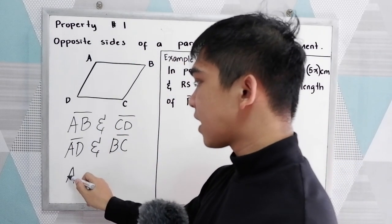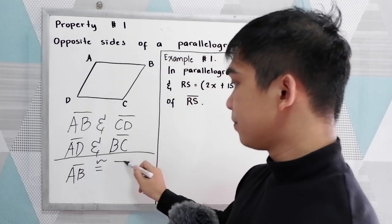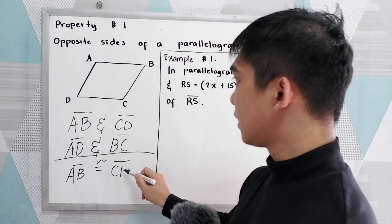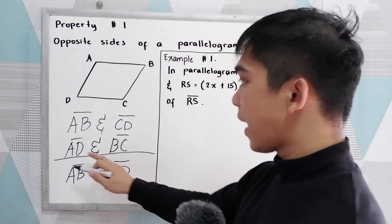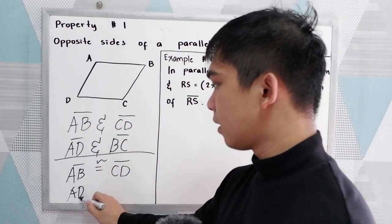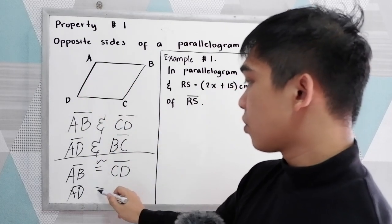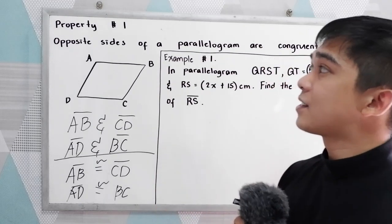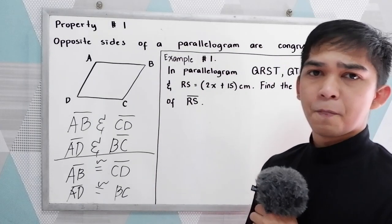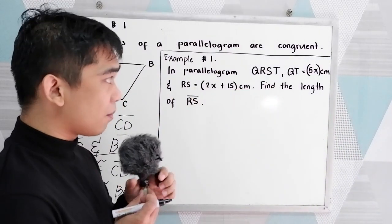So we can say that AB is congruent to CD and AD is congruent to BC. That is our property number one. To further understand, let's have our problem number one or example number one.